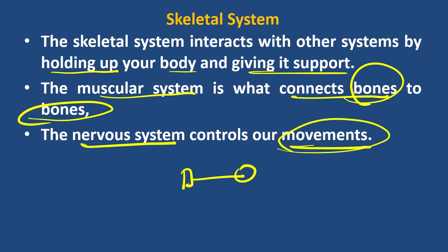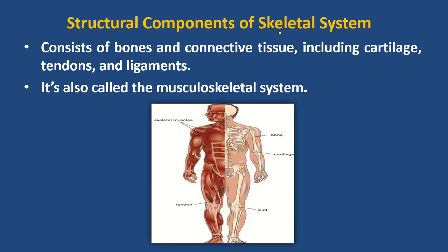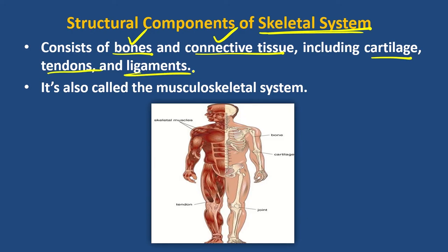This is how you move your body and control it. The structural components of the skeletal system consist of bone and connective tissue, including cartilage, tendon, ligament, joint, and bone. The bone becomes a joint like a tendon.